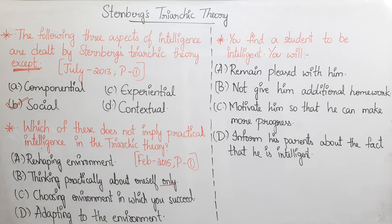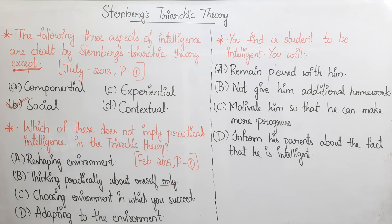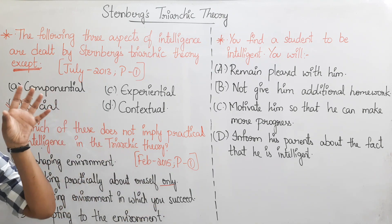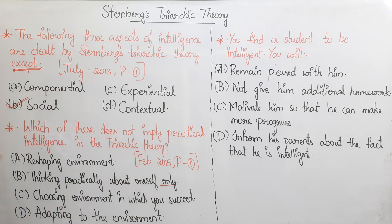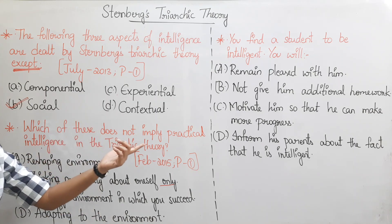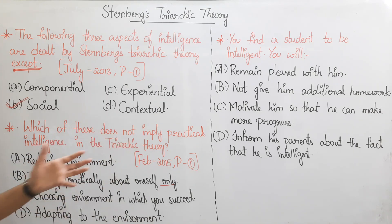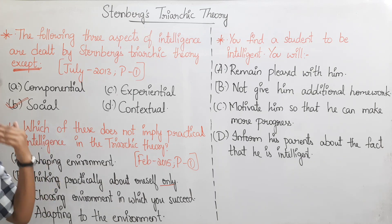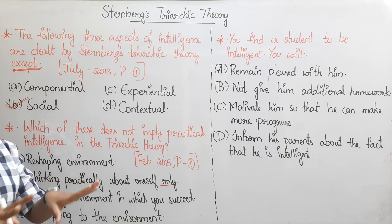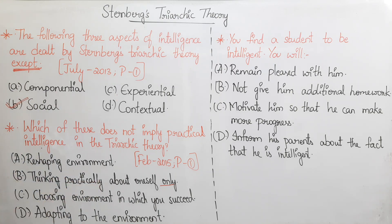In Practical intelligence, you can adapt to, reshape, or choose your environment. Option B — Thinking practically about oneself only — is not related to Practical intelligence, so Option B is the correct answer.